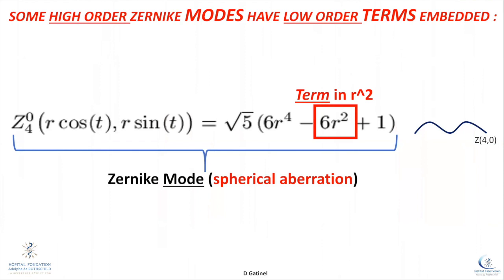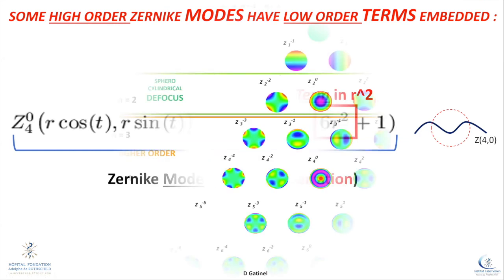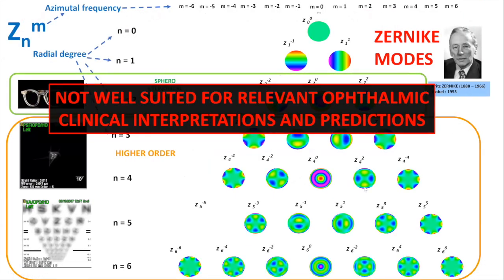There's also a confusion usually between modes and terms — a mode is the whole equation, a term is what's in the equation. You can see that there's defocus embedded in Zernike spherical aberration, and that's not negligible at all. That explains the little bump in the sombrero shape, whereas we should have a flat center. In the pyramid of Zernike modes, higher order modes are flat on the sides, but near the center of the pyramid they show central distortions which drift away from what higher order aberrations should be.